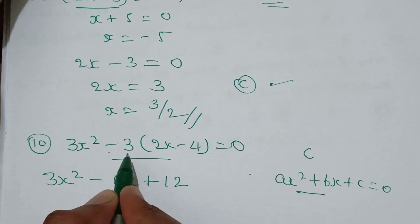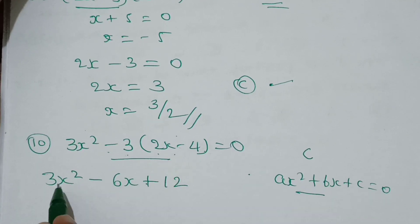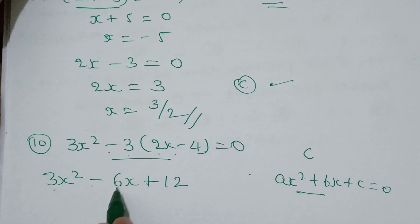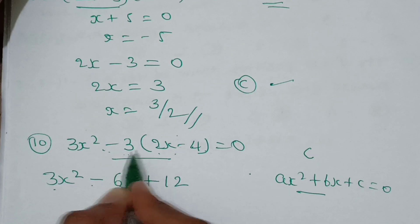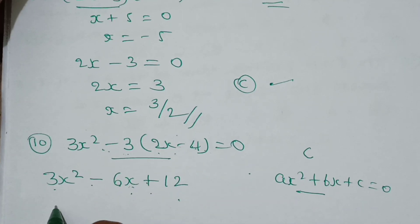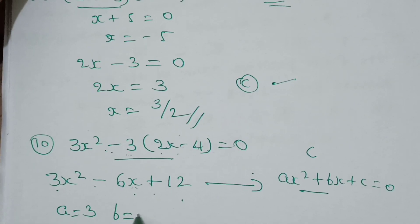So multiplying 3 by 2x and 3 by 4: 3x squared, 3 times 2 is 6, into x is 6x, minus into minus is plus, so 4 times 3 is 12. Now you can write the values: a value is 3, b value is minus 6, c value is 12.